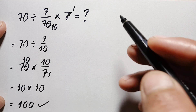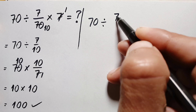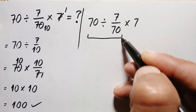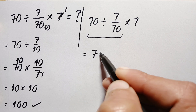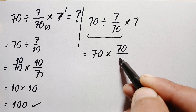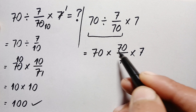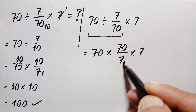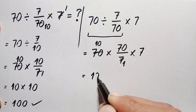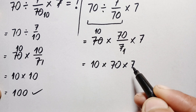To solve this problem correctly, we will do the division first. Our question is 70 divided by 7/70 times 7. We apply the capsules rule to the division: 70 changes division to multiplication and reverses the fraction, giving 70 divided by 7 times 7. We can simplify the 7 with 70: 7 times 1 is 7, 1 times 10 is 10. So this becomes 10 times 70 times 7.